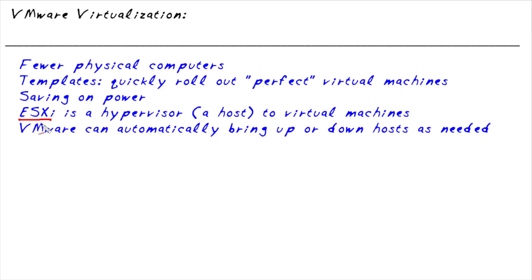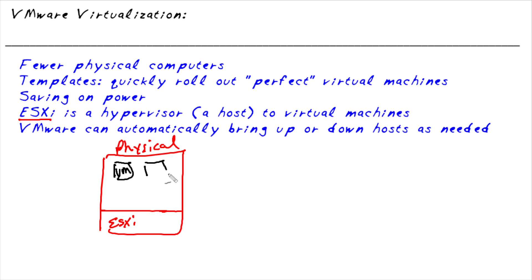So tell us about the ESXi hypervisor. What exactly is that? An ESXi host is software running on a computer that creates this virtualized playground. On a physical computer, you install the ESXi host software, and then on top of that you have your virtualized machines — maybe 15 Windows or 10 to 15 Linux machines, and whatever other operating systems you want to run. ESXi is the mothership that hosts and plays the hosting role for all the virtual machines running on that computer.